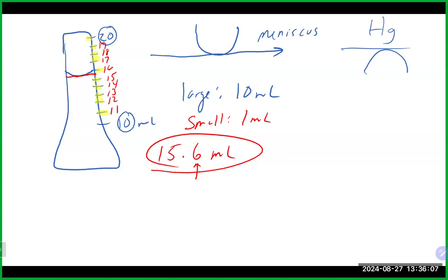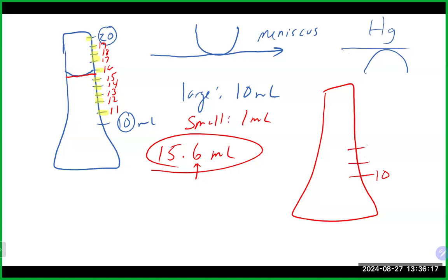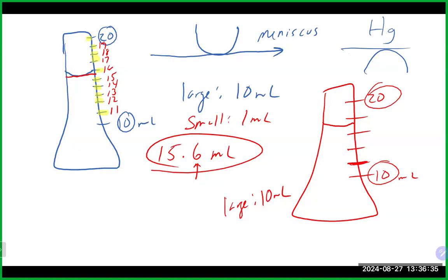It's really important to look at the scale, because not all scales are the same. Consider a graduated cylinder where between the 10 and 20 markings we have only 5 small markings. That means each small marking represents 2 milliliters — so we have 12, 14, 16, 18. When the meniscus falls between 16 and 18, the reading should be 17 milliliters.